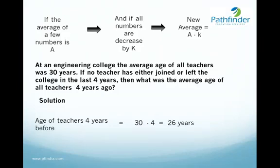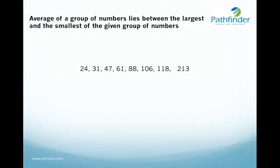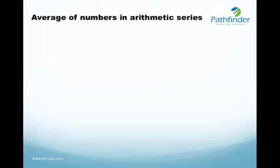Another important property is that the average of a group of numbers lies between the largest and the smallest of the given group. For example, given numbers 24, 31, 47, 61, 88, 106, 118, and 213, the average can never be less than the least number, which is 24, and can never be greater than the largest, which is 213. So the average must lie in the range 24 to 213.